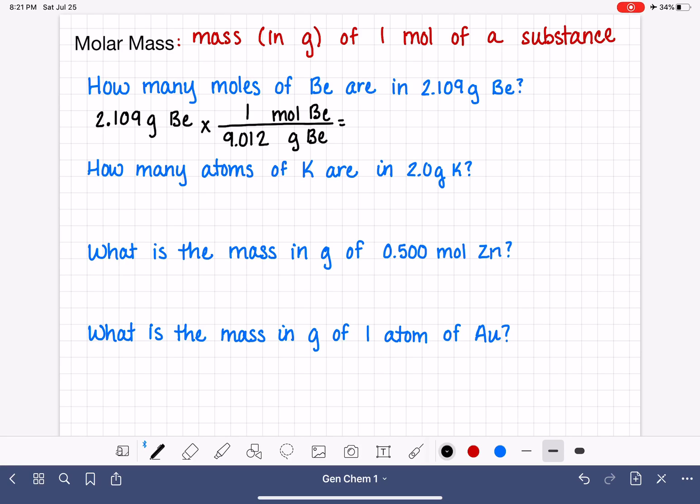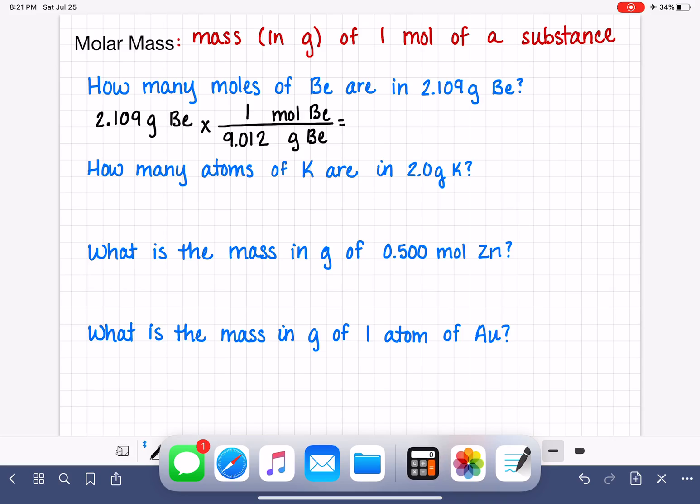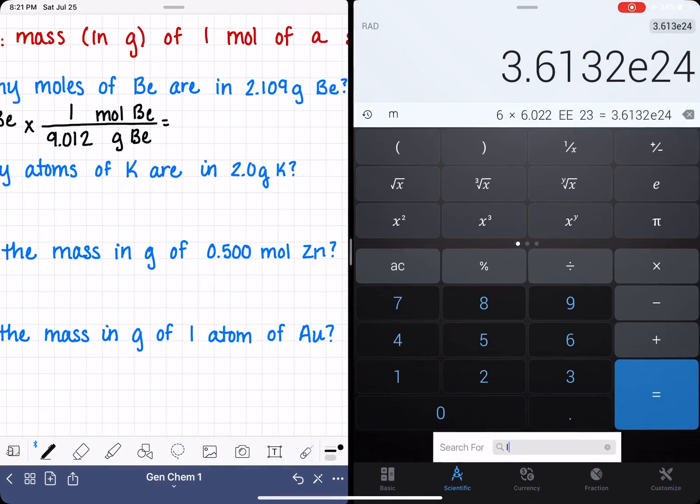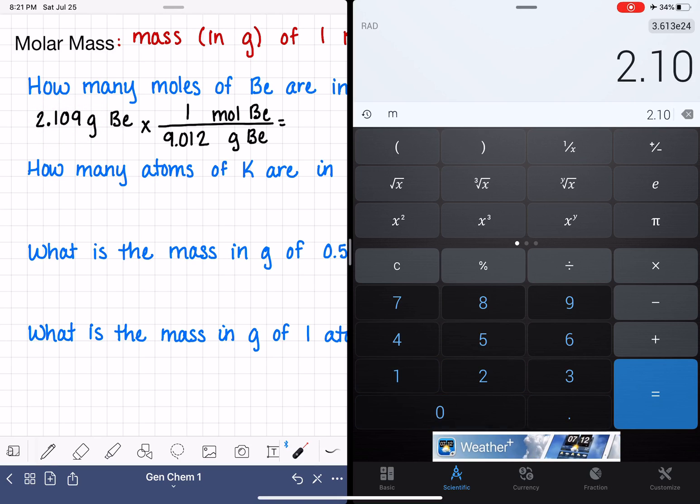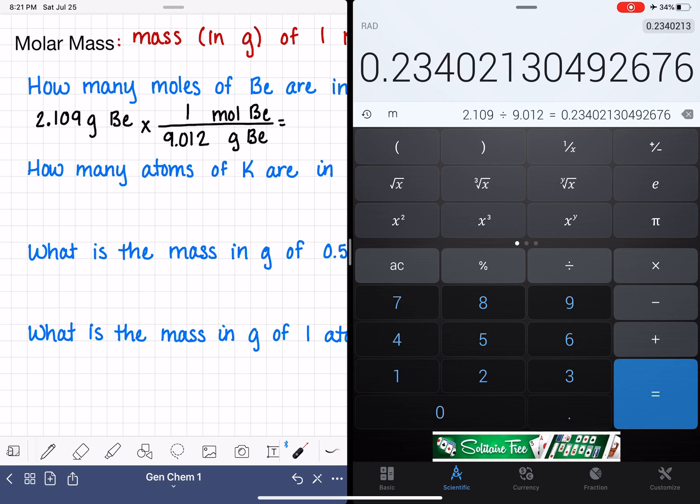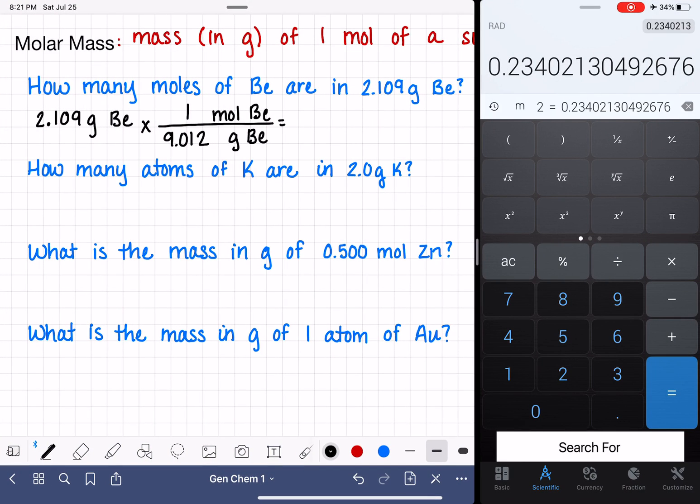And all we have to do is do the math. And for this, mathematically, we're going to do 2.109 divided by 9.012. And there is our result. Let's stick with our sig figs. So we're going to say 0.2340. 0.2340.